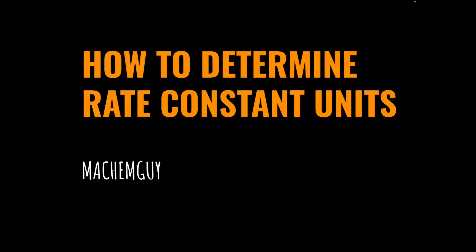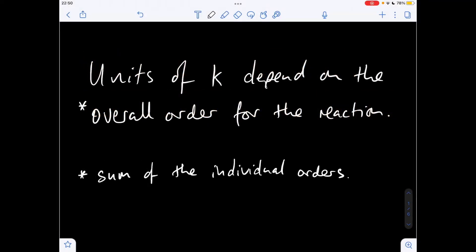In this video I'm going to take a look at how you determine the units for the rate constant. So the first thing we need to say is that the units of K depend on the overall order for the reaction.